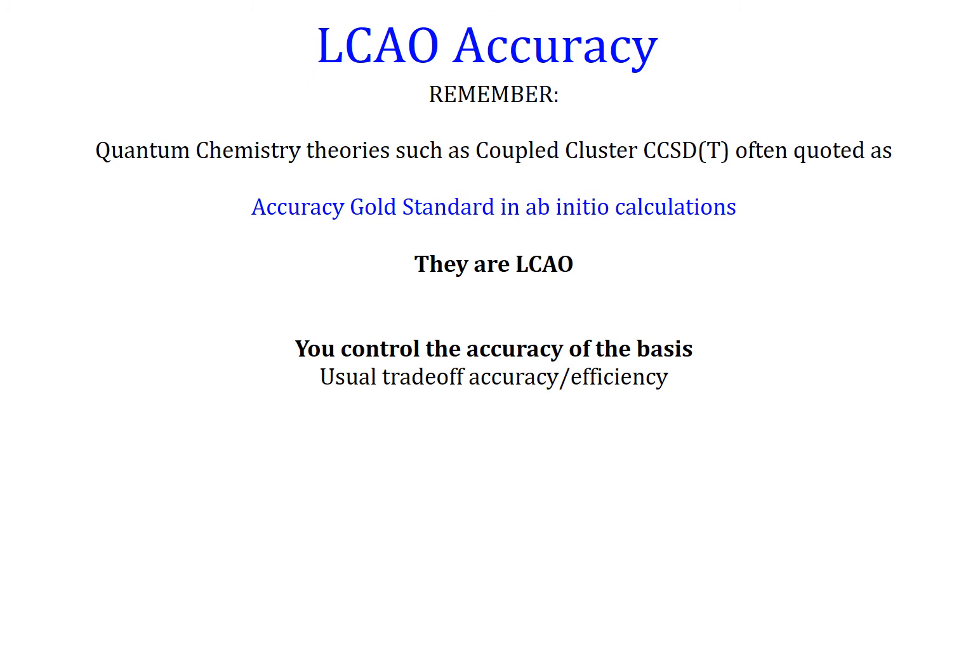An important point about the accuracy of LCAO: in quantum chemistry the gold standard of accuracy is coupled-cluster theory with singles, doubles, and triples. All of these calculations are done with LCAO, so gold standards of accuracy already use atomic orbitals as basis sets. The accuracy is controlled by the user, and there is the usual trade-off between accuracy and efficiency — the more accuracy you want, the more you have to pay.